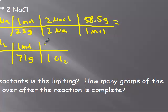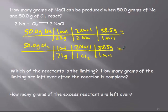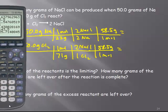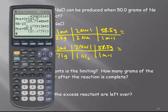One chlorine to two sodium chlorides, one mole is 58.5 grams. Pretty straightforward stoichiometry. If you're lost, go watch the other video. So 50 divided by 23 times 2 divided by 2 times 58.5, and I got, according to that 50 grams of Na, I could make 127 grams of NaCl.